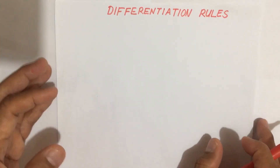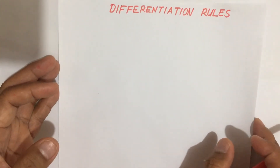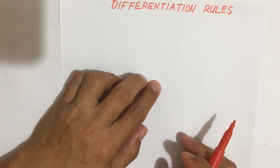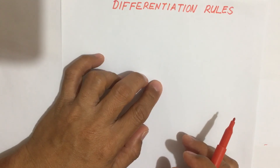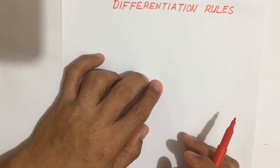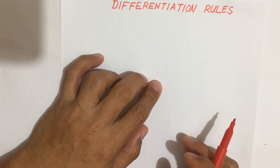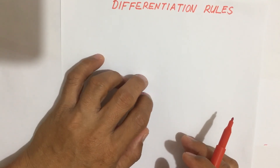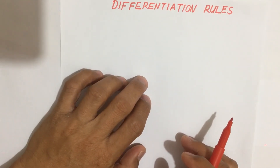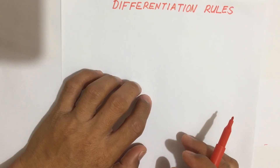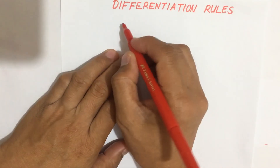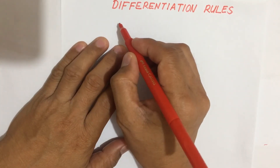Welcome everyone to our lecture for today. Today I'm going to show you some examples on finding the derivative of a function using the theorem of the constant multiple rule.